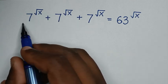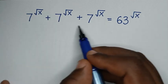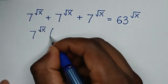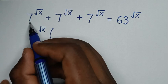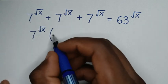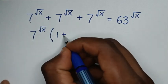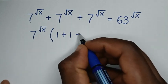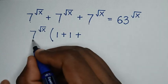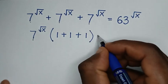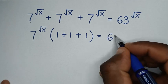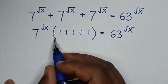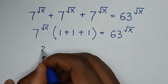In the first step, on the left side, 7 power square root of x is common. So we will take 7 power square root of x out of the bracket. Then, 7 power square root of x divided by 7 power square root of x is 1, plus 1, plus 1 inside the bracket. That gives us 1 plus 1 plus 1, which is 3.